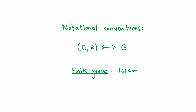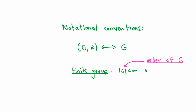A couple more notational conventions: a lot of times we'll refer to the group as just the set itself if it's clear what the binary operation is. If we're talking about the integers as a group without specifying the binary operation, you assume the operation is addition. Another definition: if we say a group is a finite group, we just mean that the cardinality of the set G — also called the order of G — is a finite number. In later videos we'll also talk about orders of elements of G, but for now the order of a group G just means the cardinality of the set G defining the group.